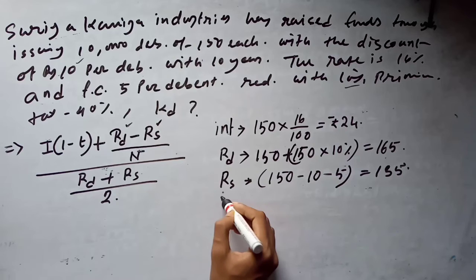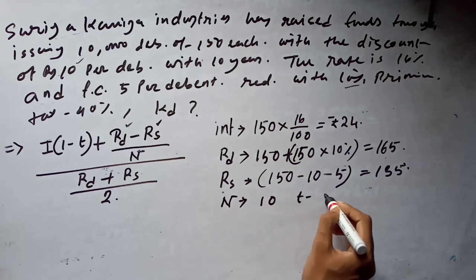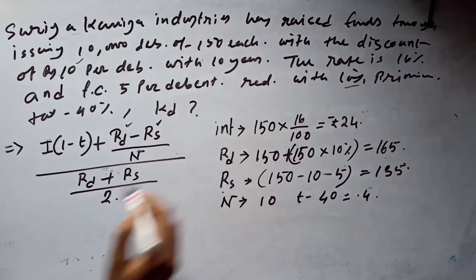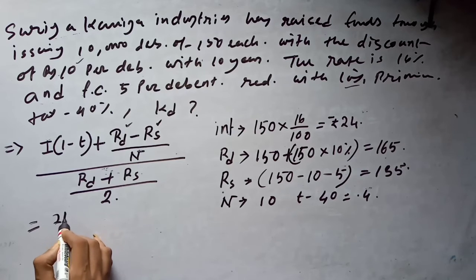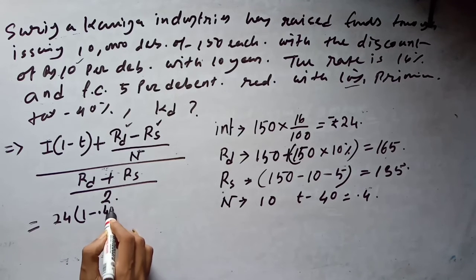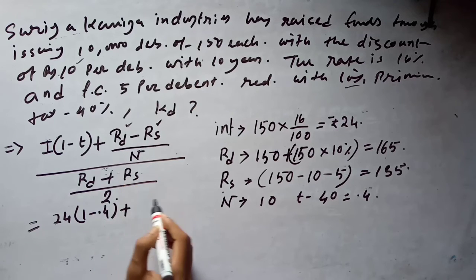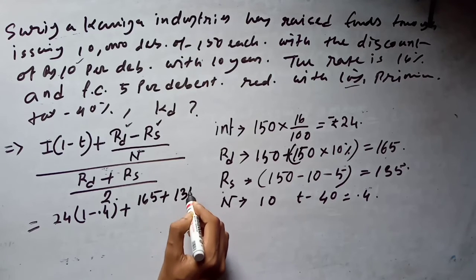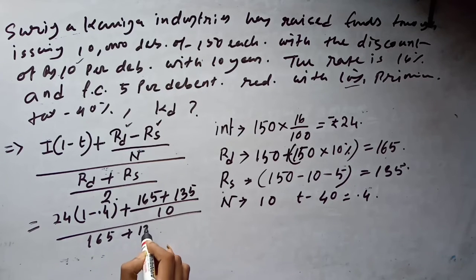So 150 minus 10 minus 5 is 135. The number of years is given as 10. Tax is given as 40%, which is 0.4. What is the interest? We calculate 24 times (1 minus 0.4).